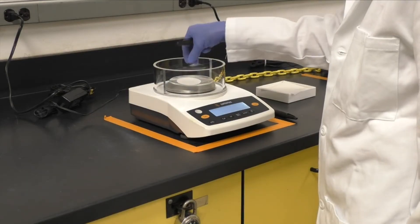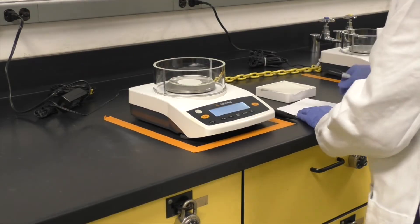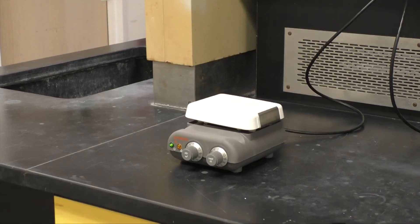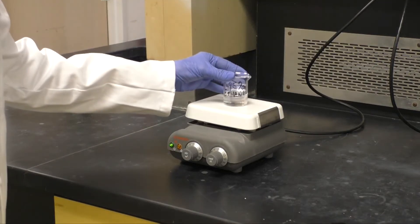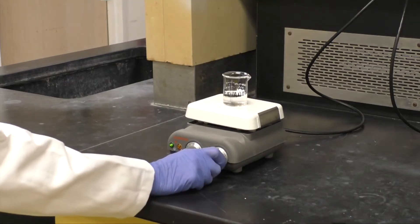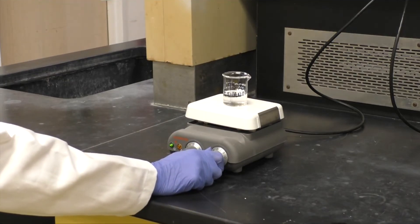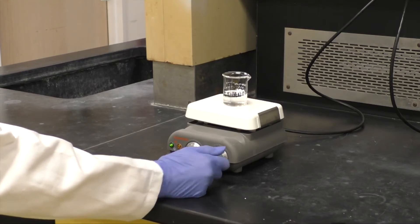While the mixture is stirring, pre-weigh a piece of filter paper and watch glass. Also, begin heating about 20 milliliters of 95 percent ethanol in a beaker for later use. Set the hot plate to about 3 to bring the ethanol to a boil.